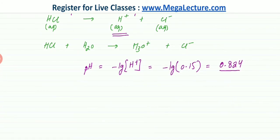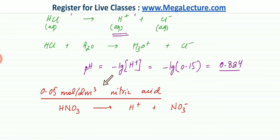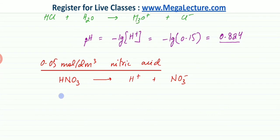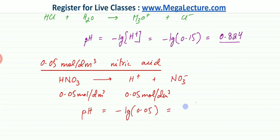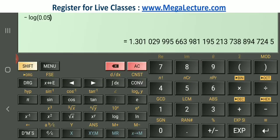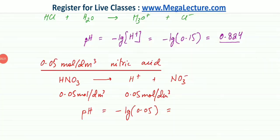Let's calculate the pH of 0.05 mol per dm³ nitric acid. The concentration of H⁺ is going to be exactly the same since it's a strong acid. Remember, only for a strong acid do the two ions have the same concentration, because a weak acid doesn't ionize fully. The pH = −log(0.05), and the calculator gives 1.30 rounded to three significant figures.